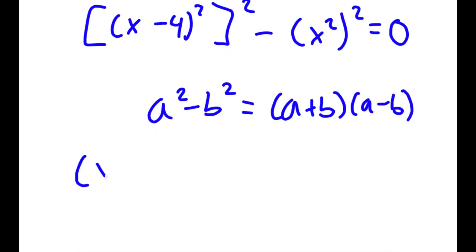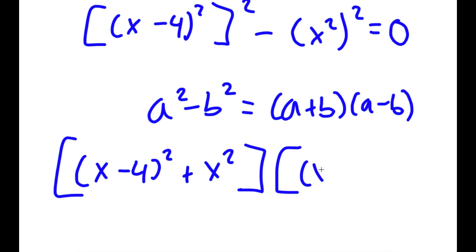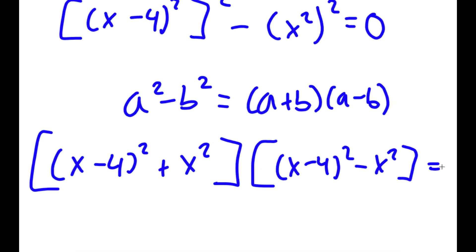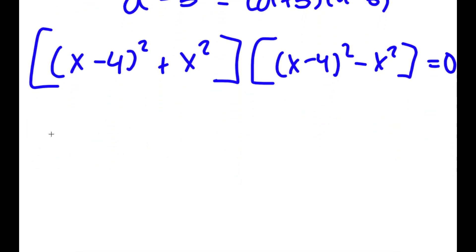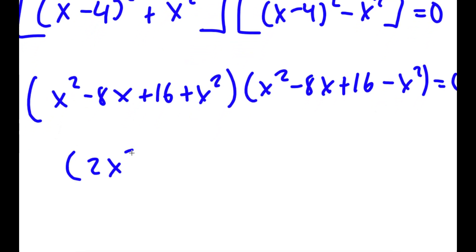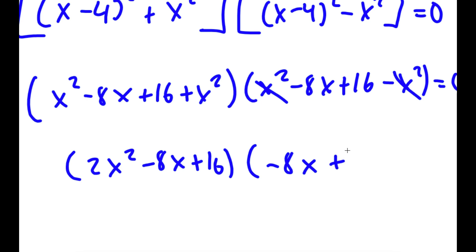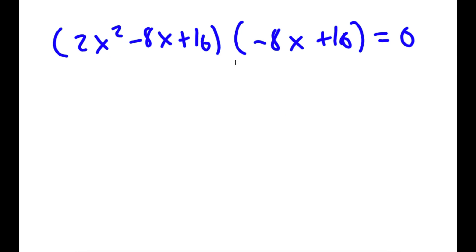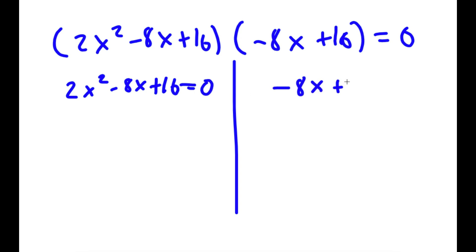This gives me x minus 4 squared plus x squared times x minus 4 squared minus x squared equal to 0. Expanding, I get 2x squared minus 8x plus 16 times negative 8x plus 16 equal to 0. So now I have two equations: 2x squared minus 8x plus 16 equal to 0, and negative 8x plus 16 equal to 0.